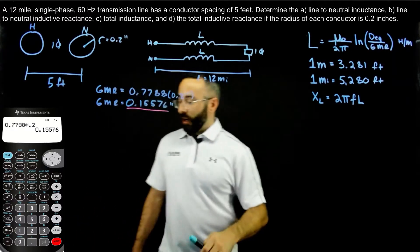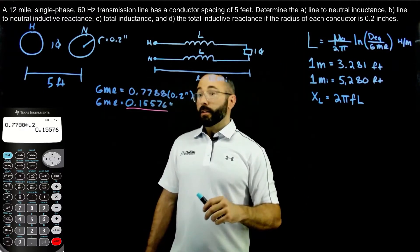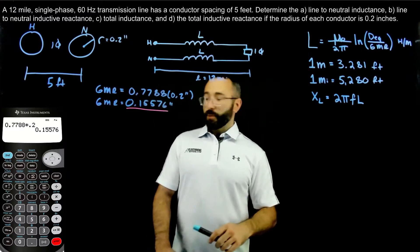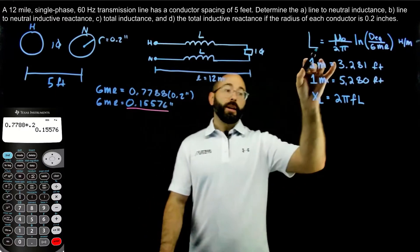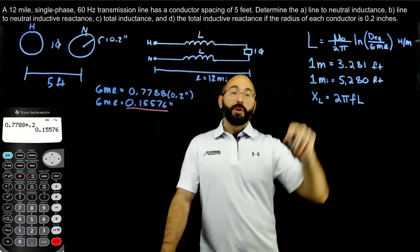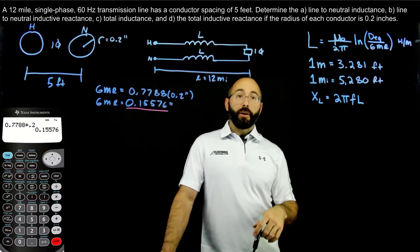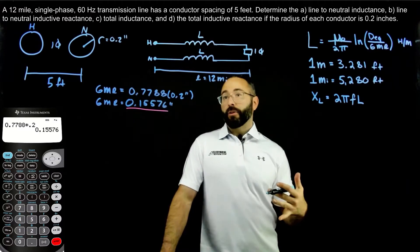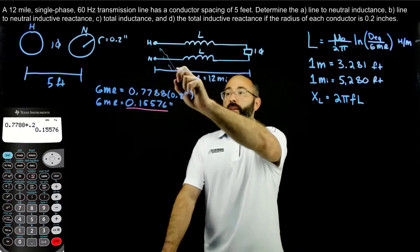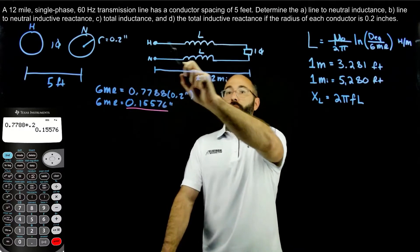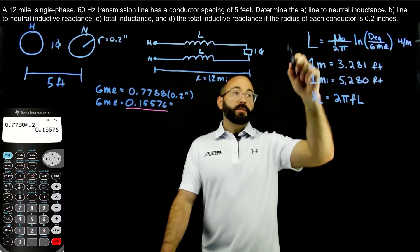Let's enter these values in the calculator. 0.7788 times 0.2 inches gives us a value of 0.15576 inches for the GMR of the conductor. Now that I have that value, let's calculate the inductance. For a single-phase transmission line, there are actually two different values for inductance and inductive reactance. You have the line-to-neutral value, also called the average or one-way value — that's the inductance from here to the load.